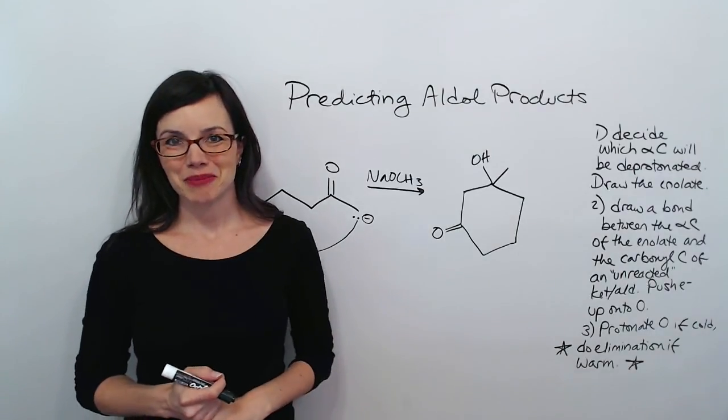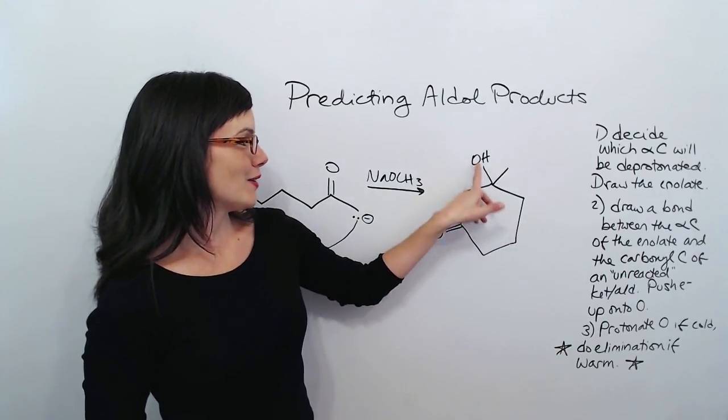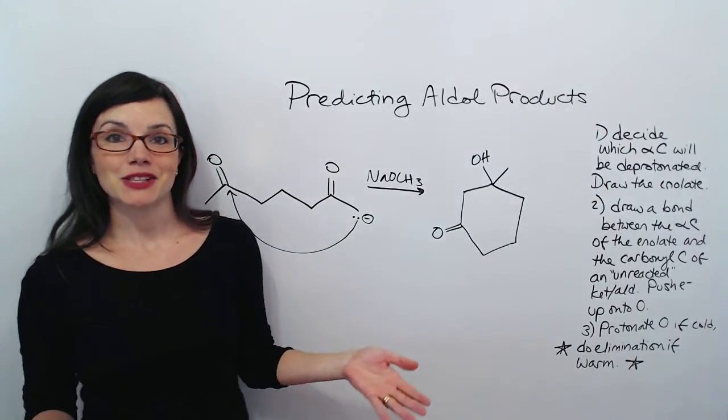This is our reaction product. Again, you can see that we have a carbonyl, an OH, and O1230. So, hopefully, your product has those features.